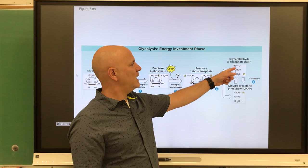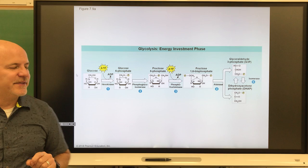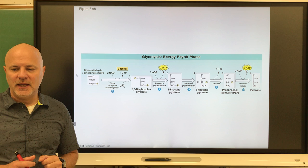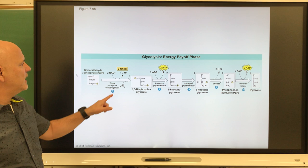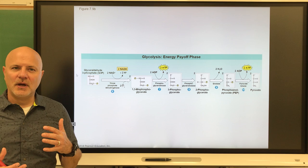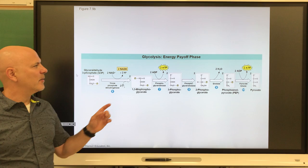Next, we split that glucose into two molecules known as G3P. The second part is the energy harvesting steps — all these steps occur twice because we had two G3P. Each G3P has energy removed, making an NADH, which is an electron carrier — an energy carrier. We took NAD, added a couple of electrons and a hydrogen ion, and made NADH. Also, each G3P has energy removed from it again, making two ATP, resulting in pyruvate, also known as pyruvic acid.